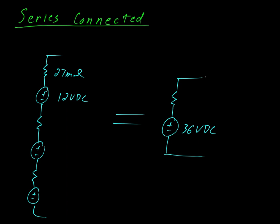When you do that, this is equivalent of saying a single 36 volt power supply in series with a resistor. We can do a quick calculation to figure out what the resistor is. You'll notice that all of them are in series. So the equivalent resistance is equal to 27 plus 27 plus 27 milliohms or 81 milliohms.